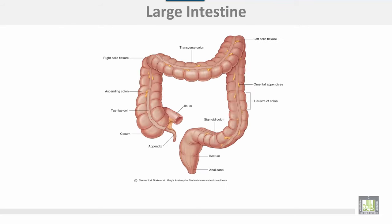The large intestine starts with the cecum, ascending colon, transverse colon, left colic flexure, descending colon, sigmoid colon, and rectum.